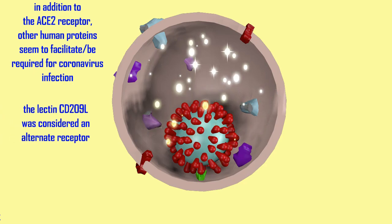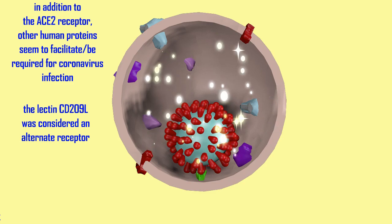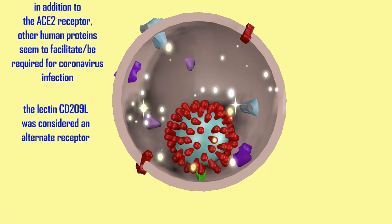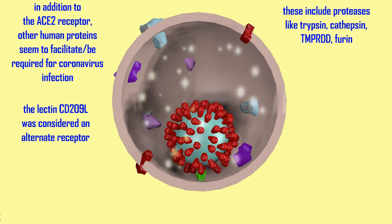These include endosomal cathepsin, the transmembrane protease serine protease TMPRSS, furin, and trypsin. Furin is actually required for a number of enveloped viruses to trigger the release of the viral nucleic acid into cells, including HIV, Ebola, and influenza.